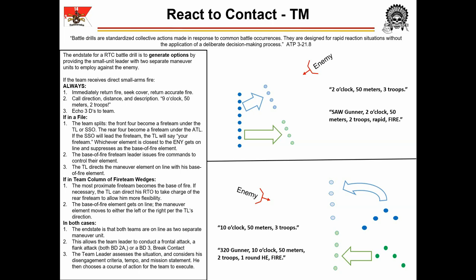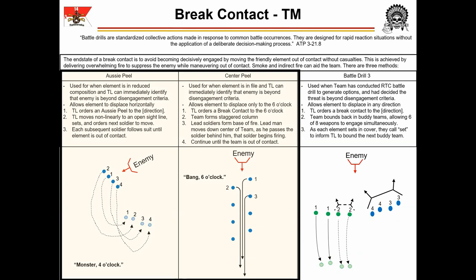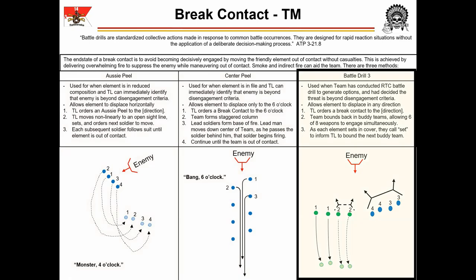If the team chooses to break contact, there are several options, bringing us to the second board in the presentation. The end state of a break contact is to avoid becoming decisively engaged by moving the friendly element out of contact without casualties. This is achieved by delivering overwhelming fire to suppress the enemy while maneuvering out of contact. Smoke and indirect fire can aid the team. There are three methods we will use in C-Troop. The first two, Aussie Peel and Center Peel, are used when the team is traveling in file. The third, Battle Drill 3, is used when the team has conducted a React-to-Contact but realizes the threat exceeds their disengagement criteria. As we have just briefed React-to-Contact, we will begin with the third option, Battle Drill 3.